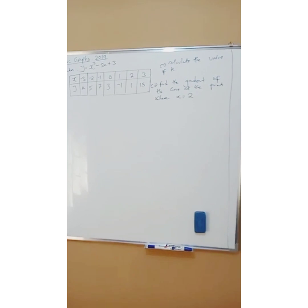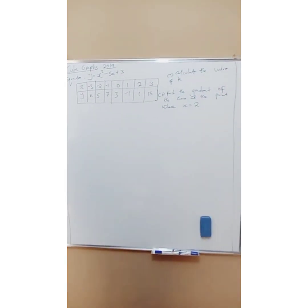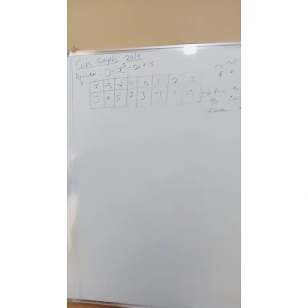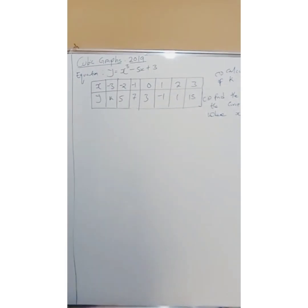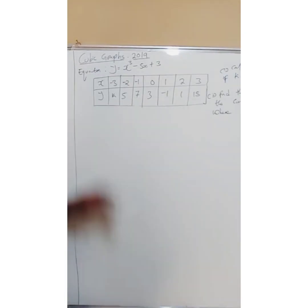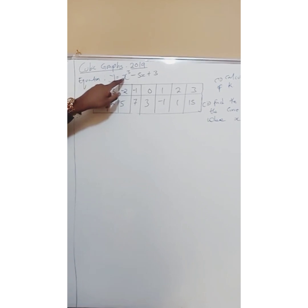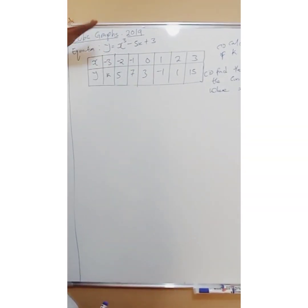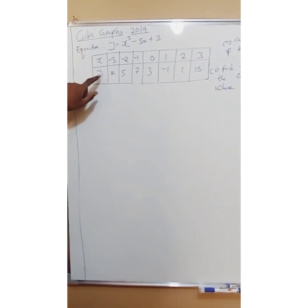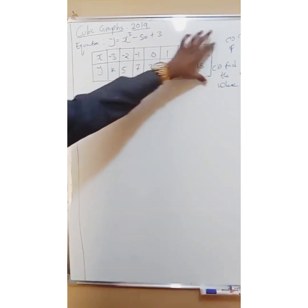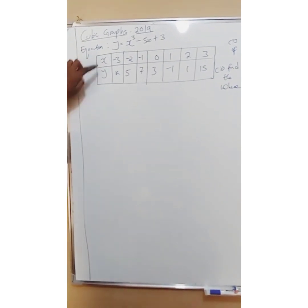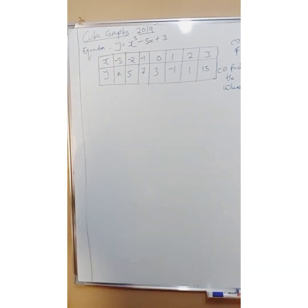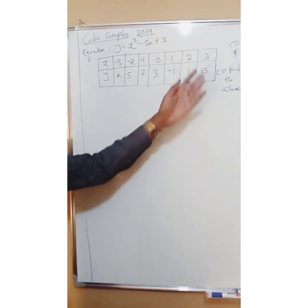Let's look at this 2019 question. The equation given is y = x³ − 5x + 3. They want you to plot this graph, and they have already given you a table of values with x and y. The x values run from negative 3 to 3, and they have given you a value k, plus y-values including 5 up to 15.